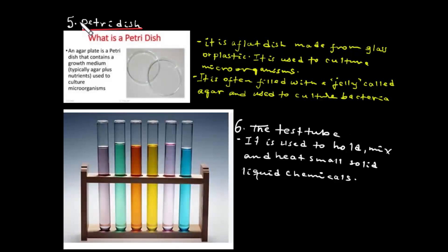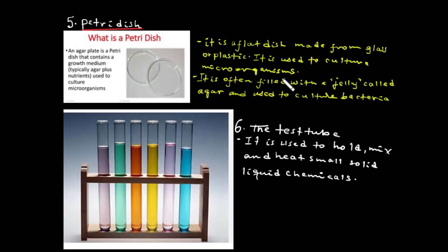This is a petri dish — another laboratory tool. A petri dish is a flat, circular dish made from glass or plastic, used to culture microorganisms. It is often filled with a jelly called agar plus nutrients, used to culture bacteria.